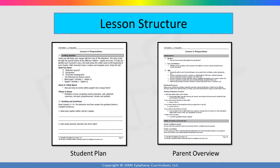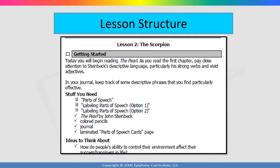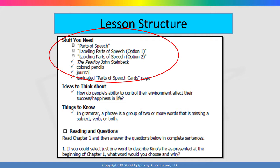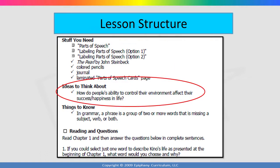Each lesson is presented in an easy-to-use format with a student plan and a parent overview. You should review the parent overview section each day before your child begins the lesson. Each student plan opens with an introduction that will get your child started on the day, followed by a materials list showing the student activity pages and general materials needed. In the age 11 to 13 level, your child will keep a language arts journal throughout the year — simply a notebook that your child will be instructed to write in. Ideas to think about are conceptual questions related to each unit that your child will explore and answer through the lesson.